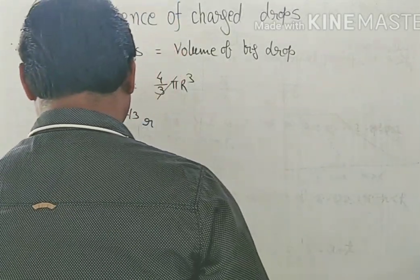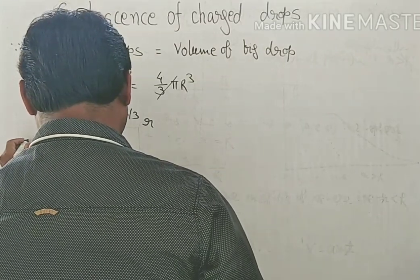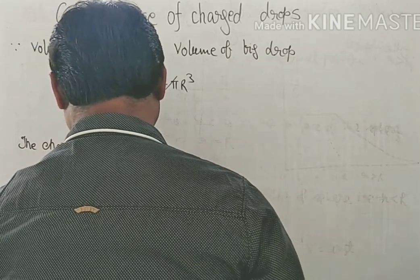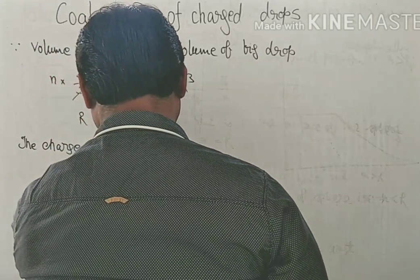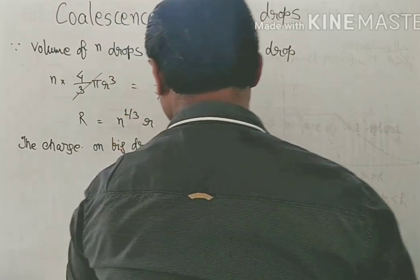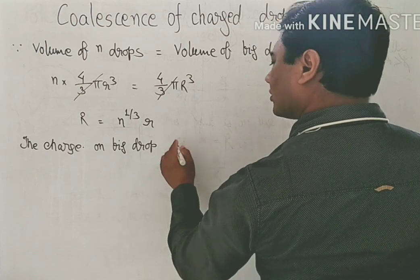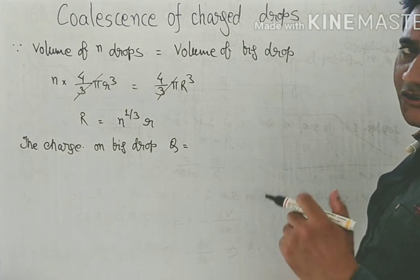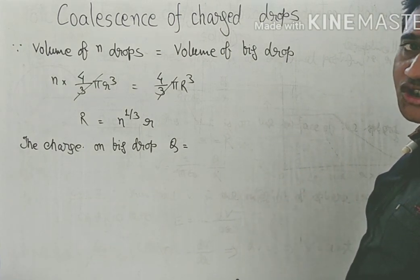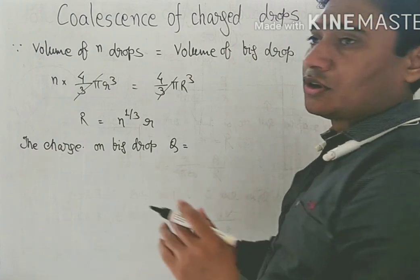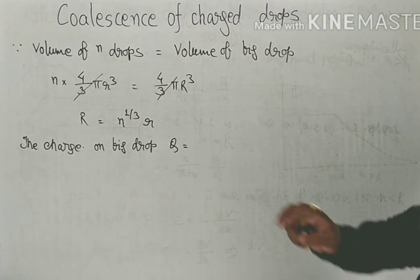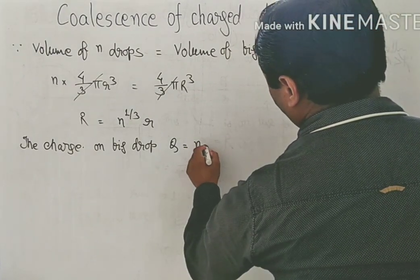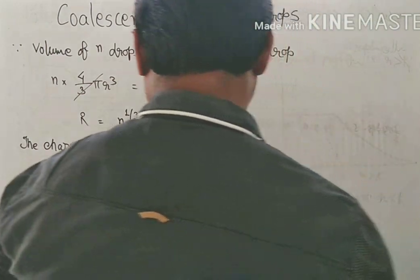The charge on the big drop — let that be capital Q. Since one small drop carries charge small q and there are n such drops, by the additive property of charge, the total charge Q = n × q.